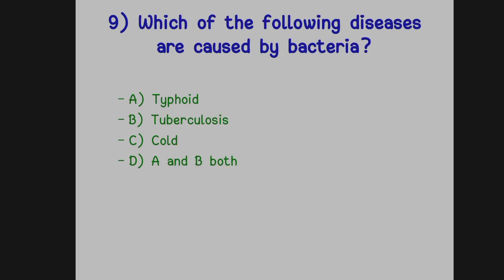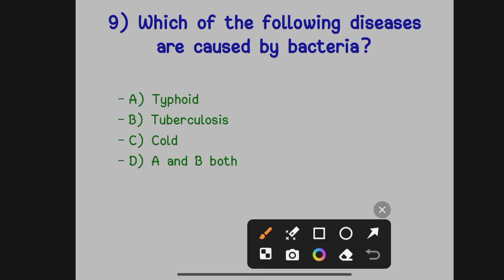The next question: which of the following diseases are caused by bacteria? Option A: Typhoid. Option B: Tuberculosis. Option C: Cold. Option D: A and B both. The correct answer is Option D, A and B both — typhoid and tuberculosis are caused by bacteria.